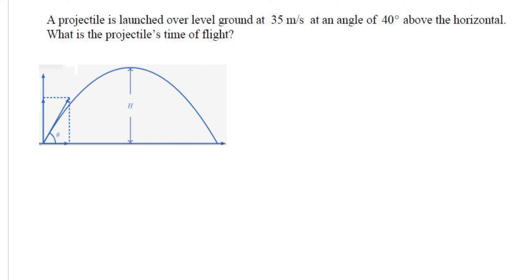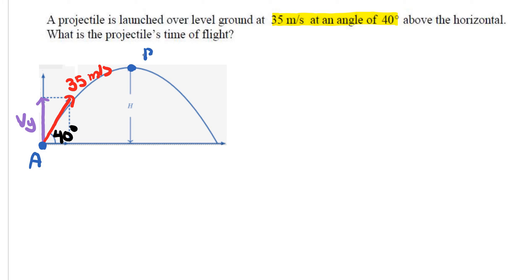For this next question, a projectile is launched over level ground at 35 meters per second at 40 degrees above the horizontal, and we want to find the projectile's time of flight. We need the vertical velocity component. We analyze from A to B (upward) and from B to C (downward), where the time from A to B equals the time from B to C.